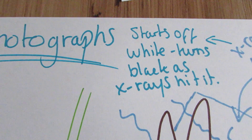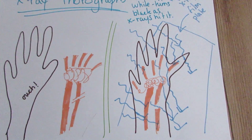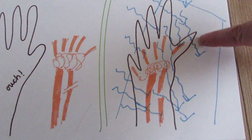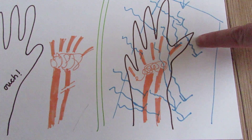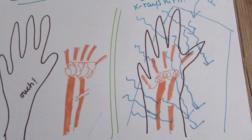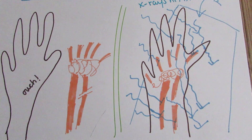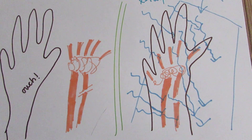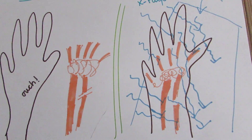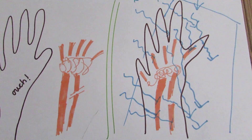The film starts off white and turns black as x-rays hit it. The x-rays will go straight through the soft tissue, hit the x-ray film and turn it black, but will get stopped by bone or metal — anything really hard and dense — and this will show up white on the x-ray film. Then you'll be able to see where a potential break may be.